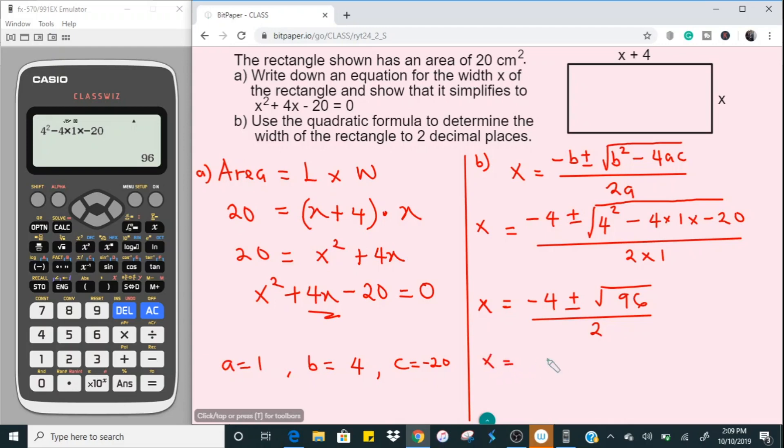So I'm going to split this up. There's going to be minus 4 plus square root of 96 divided by 2, or the other value, minus 4, this time instead of using the positive, I'm going to be negative here, minus square root of 96 divided by 2.